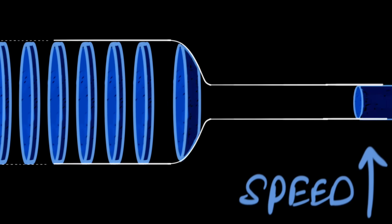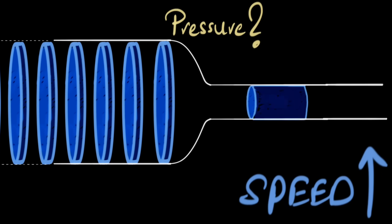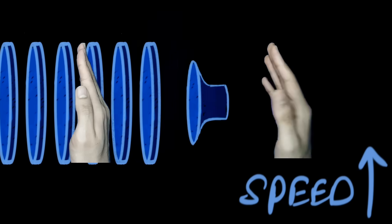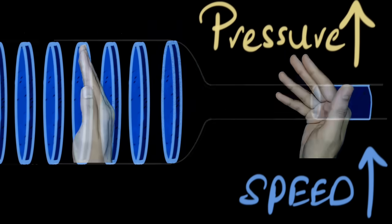As this pipe narrows, we know water speeds up, but what happens to its pressure? Since faster water hits my hand harder, I thought the pressure should also increase.